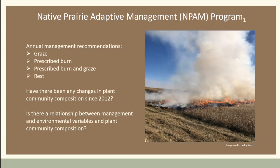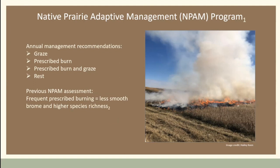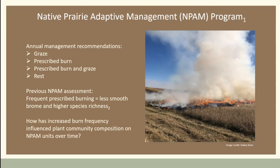Basically we surveyed in 2012 and 2013, looking at whether we could see changes based on management in just those two years — giving us a baseline. Our updated research questions from the more recent survey are: has there been any change in plant community composition since 2012? Is there a relationship between management and environmental variables and plant community composition? And from our 2012-2013 assessment, frequent prescribed burning equaled less smooth brome and higher species richness — were we seeing the same thing over time?